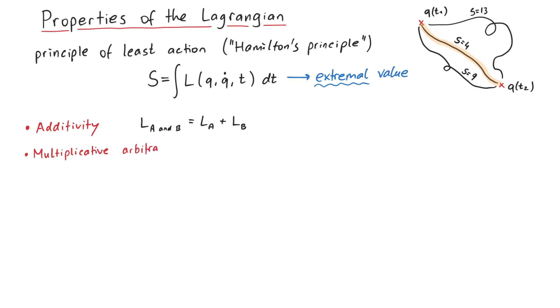Second, multiplicative arbitrariness. Multiplying the Lagrangian of a system by a constant value does not change the equations of motion, since we set delta s equal to 0.